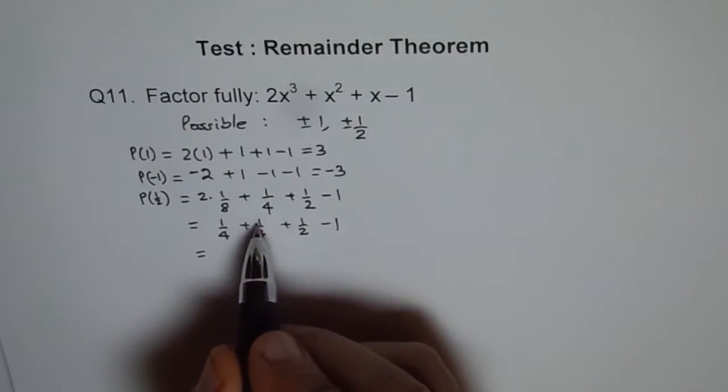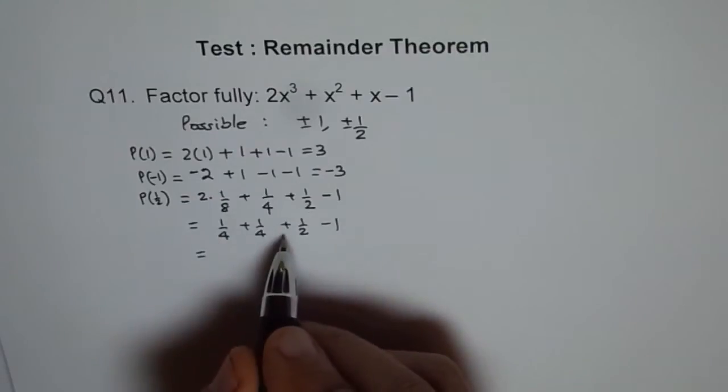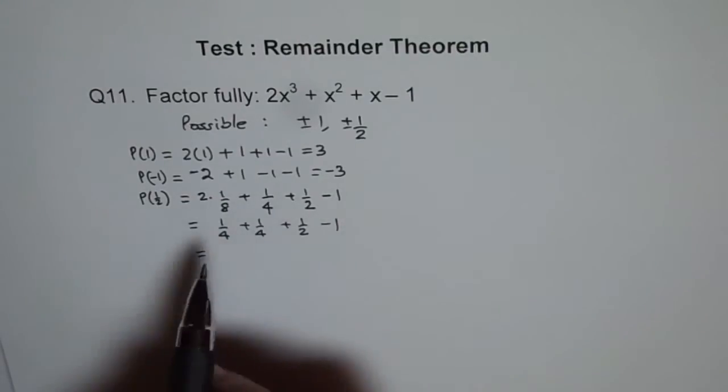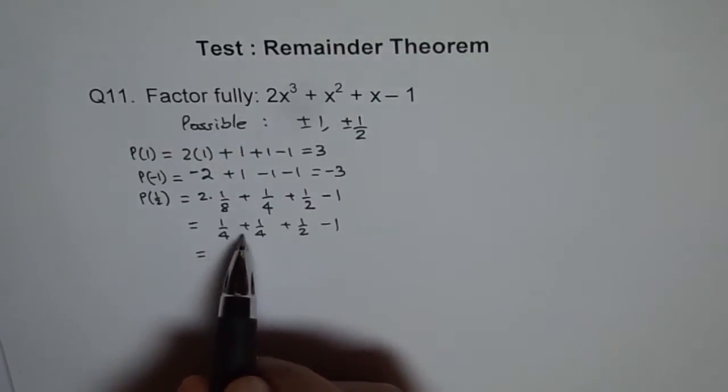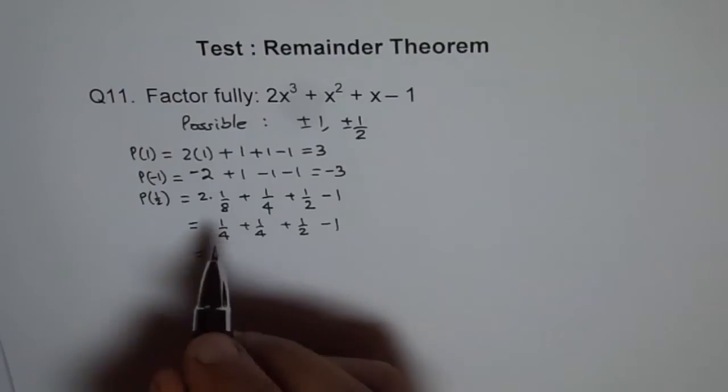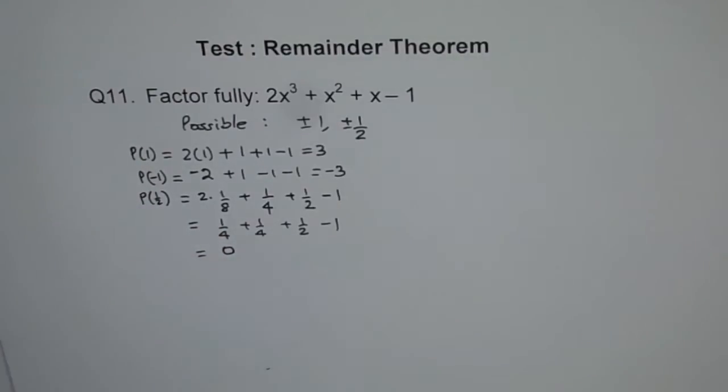Now this could be written as 2/4. Then I have 2 + 1 = 3, 3 + 1 = 4. So I get 4/4, which is 1. And 1 - 1 is 0. So we get a factor here. The value of 1/2 gives us the factor.